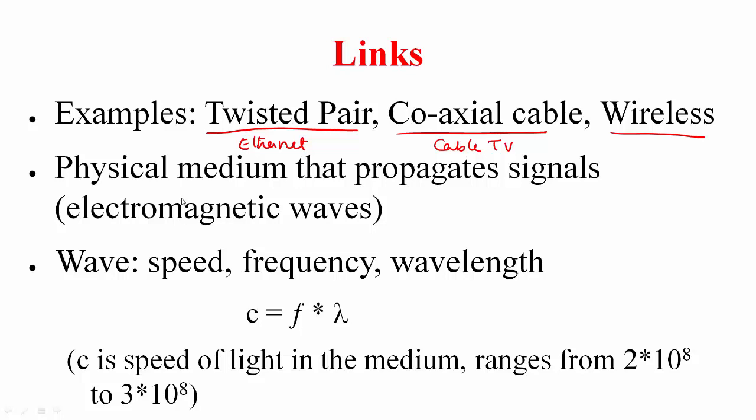Now when I mention a wave, your physics background should flash this equation in your head, where the speed of light in the medium is given as the product of the frequency and wavelength of the wave. Typically you are aware of this number, the speed of light in vacuum or free space. But typically in some of the copper wires or coaxial cable, the speed of light is a lot less, ranging from 2×10^8 to 3×10^8. For example, in coaxial cable it's only about 60% of the speed of light in vacuum.